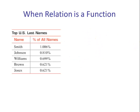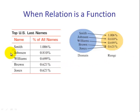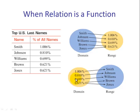Our first example involved the top US last names. If we were to make a mapping where the names are the inputs and the outputs are the percentages, we would say this is a function. Even though we have two inputs going to the same output, that's still a function. What is not a function is if we switch it — if the domain is the percentages and the range is the names, we would have an input 0.621% going to two different outputs, so that's not a function.